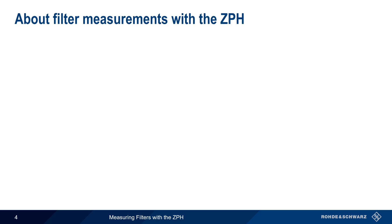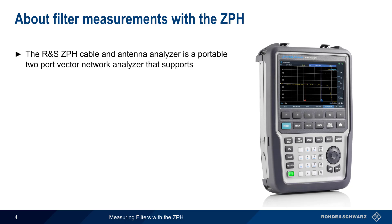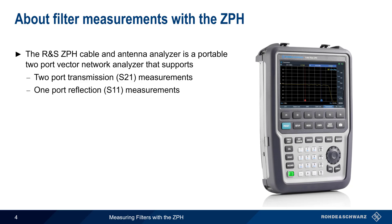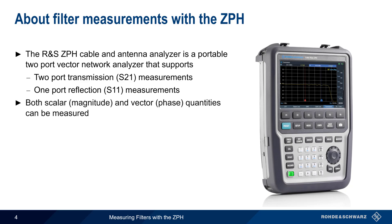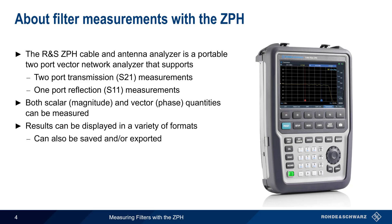The Rohde & Schwarz ZPH cable and antenna analyzer is a portable vector network analyzer that supports both two-port transmission, or S21 measurements, and one-port reflection, or S11 measurements. Both scalar or magnitude measurements, and vector or phase measurements, can be made with a ZPH. Measurement results can be displayed in a variety of formats, and results can be easily saved or exported in standard formats. In the remainder of this presentation, we'll go step-by-step through how to perform both transmission and reflection measurements on connectorized filters using the ZPH.